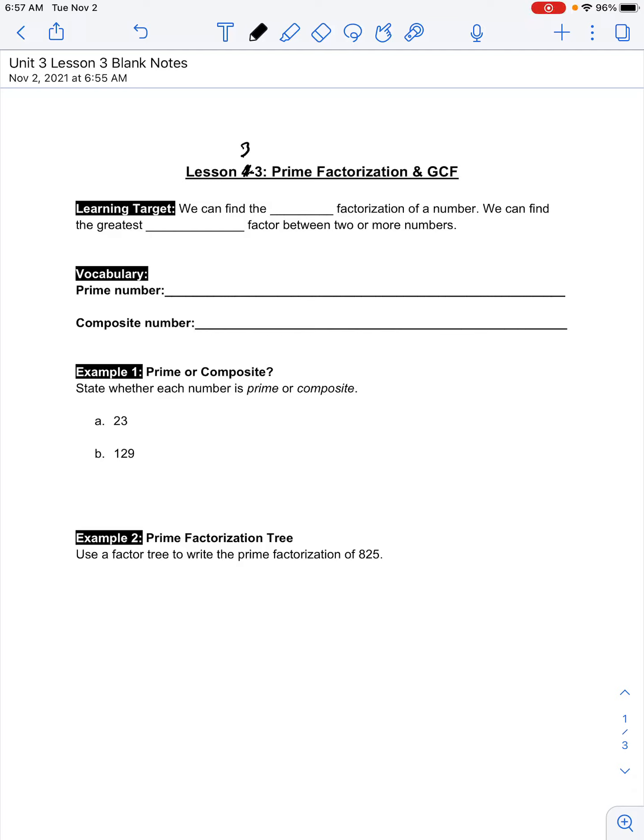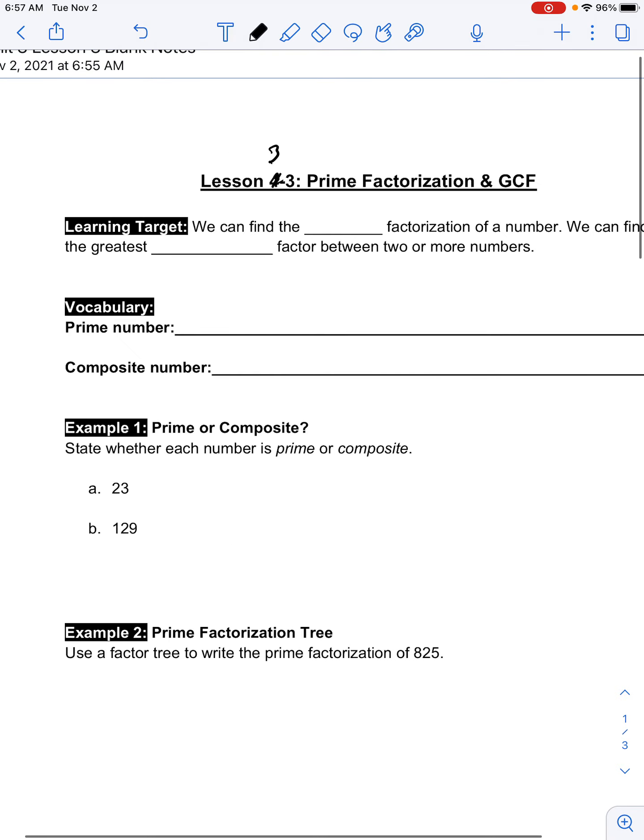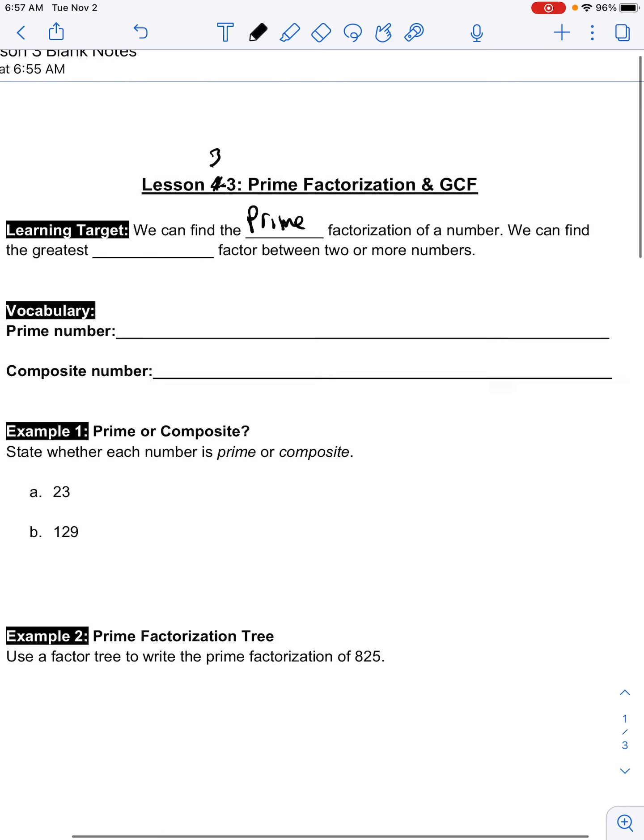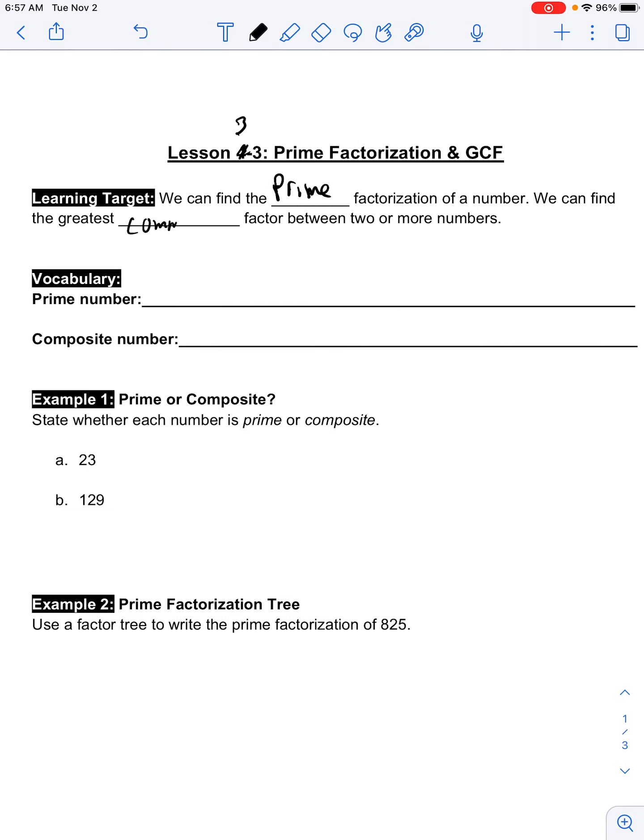All right, here we go. Unit 3, Lesson 3. Let's take a look. So, our learning target is we can find the prime factorization of a number, and we can find the greatest common factor between two numbers.